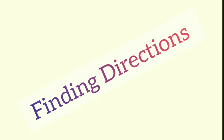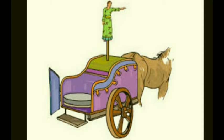One such story is about an emperor in China. It is said that he had a chariot with a statue of a lady that could rotate in any direction, with an extended arm as if showing the way. The statue had an interesting property — it would rest in such a position that its extended arm always pointed towards south. By looking at the extended arm, the emperor was able to locate directions when he went to new places on his chariot.